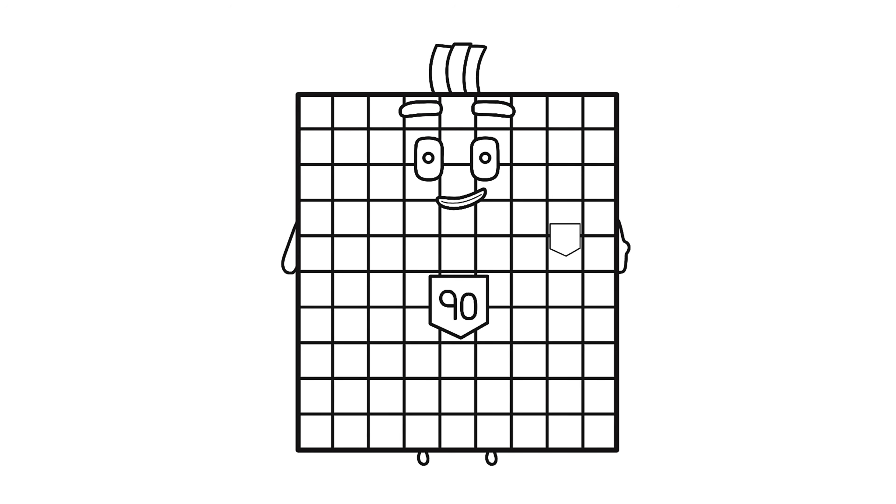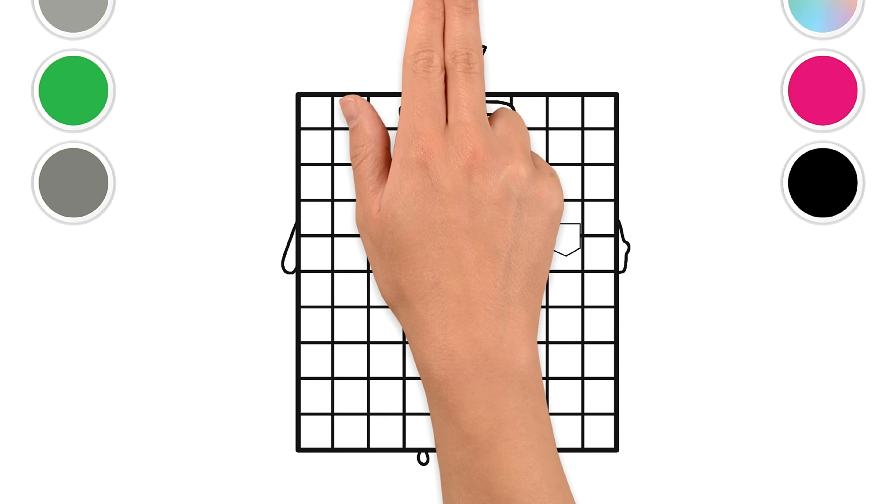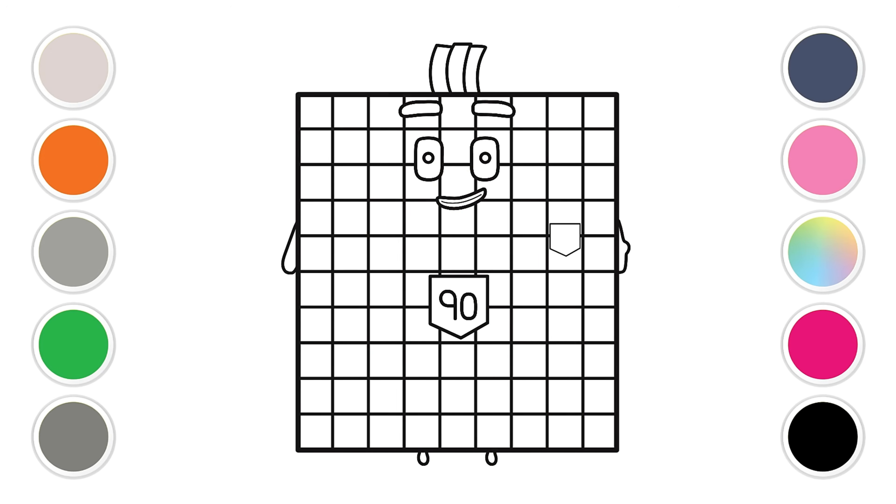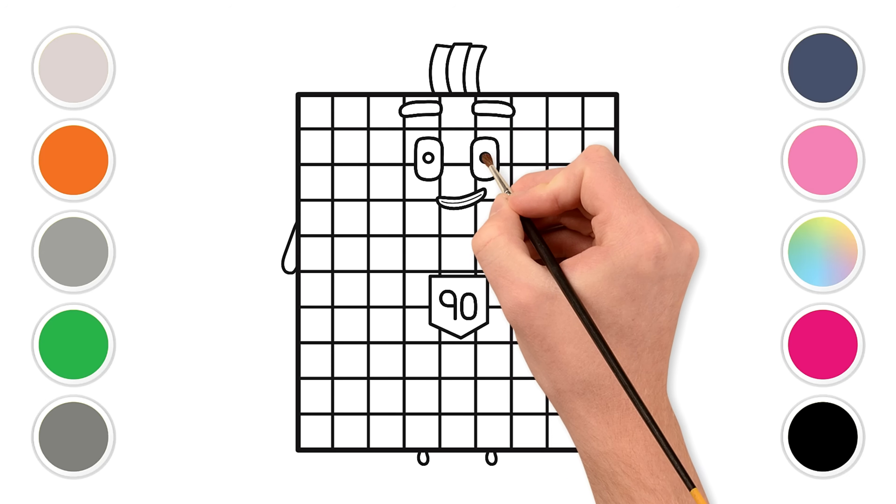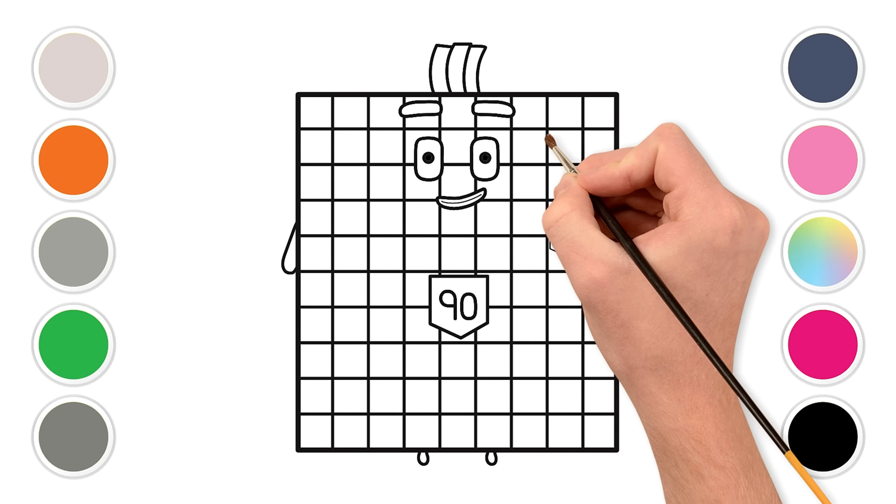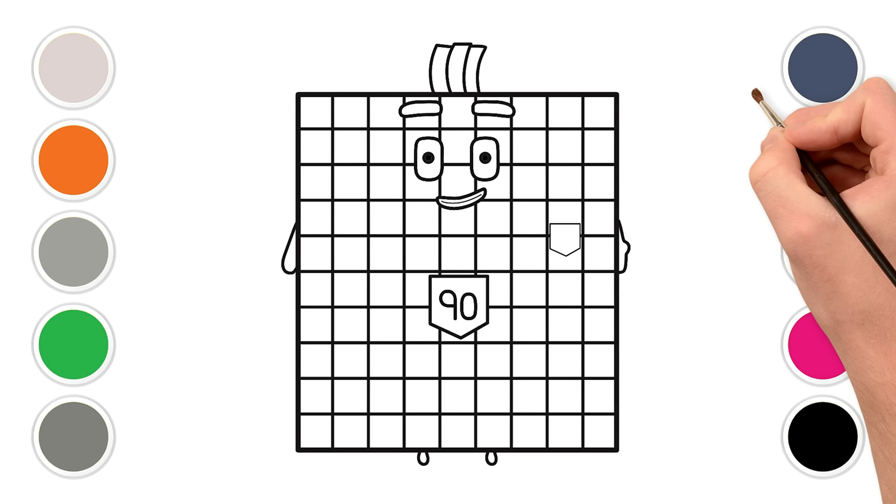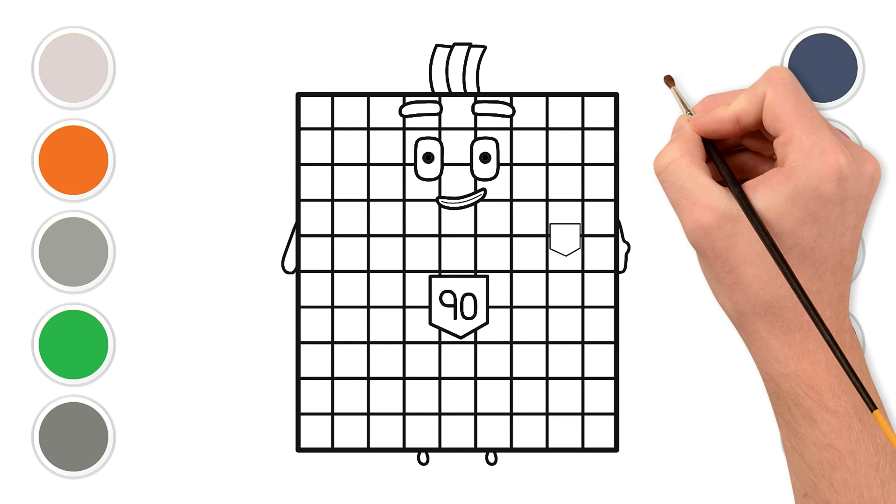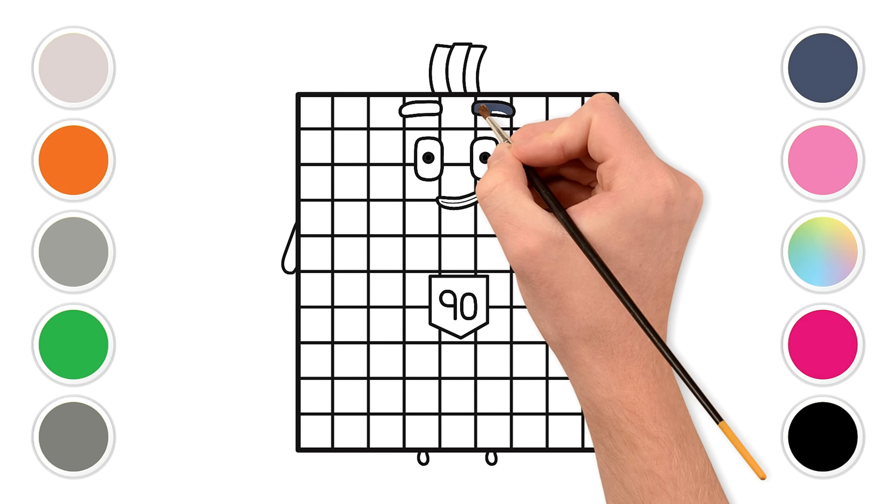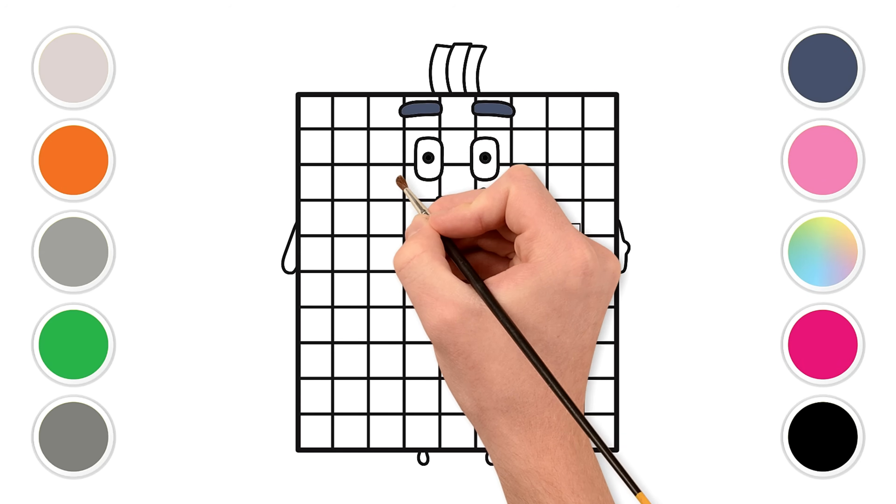Let's bring number block 90 to life with colors. Are you ready? First pick up your black color and carefully color in the pupils. Now use a dark blue color. Color in his eyebrows and his smile with dark blue. He's looking super friendly now.